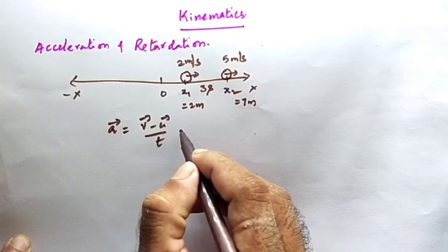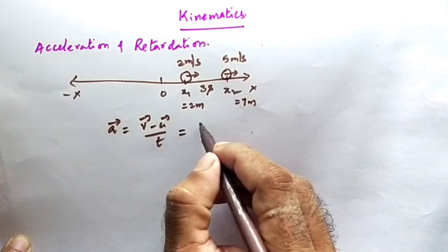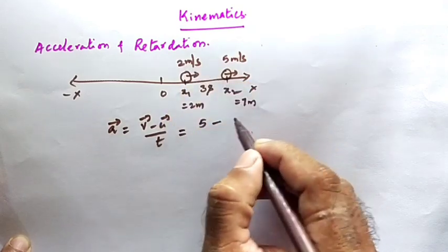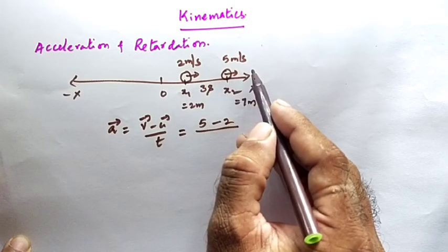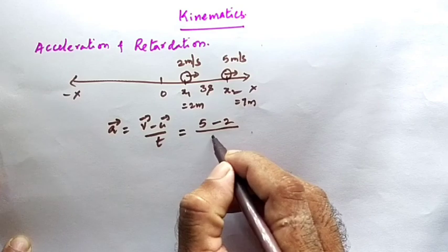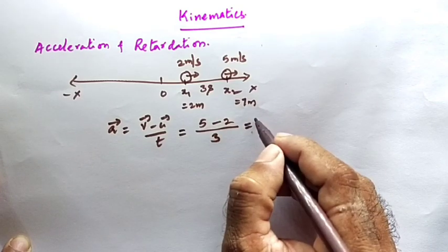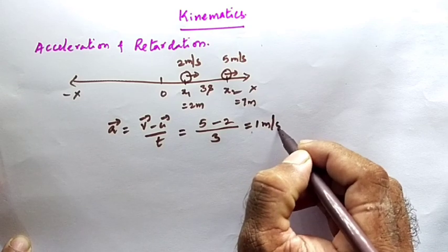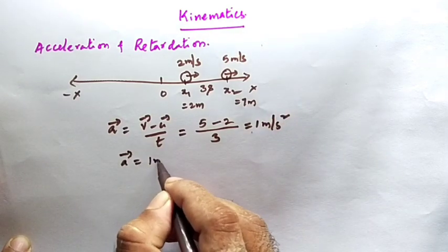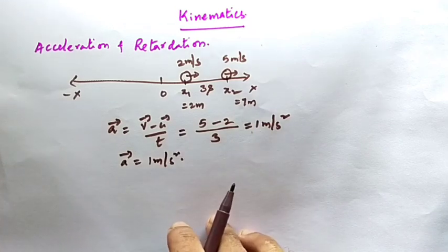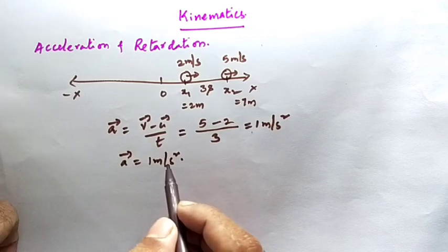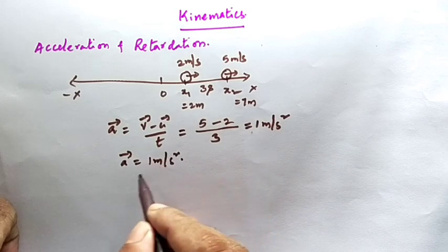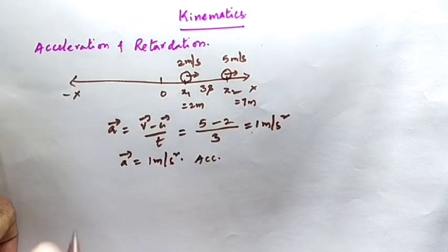Final velocity is 5 m/s, initial velocity is 2 m/s. Since both are moving in the same direction, only the magnitude is changing. Time is 3 seconds. So acceleration = (5 − 2) / 3 = 3/3 = 1 meter per second squared. The body is undergoing accelerated motion.